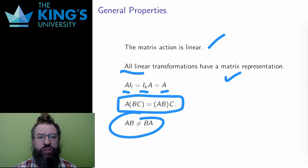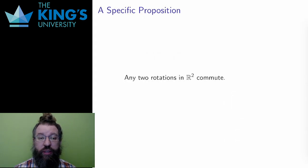That's a good start, but what else can I say? Well, one thing I can investigate is the behavior of certain subsets of transformations. Here is a proposition: any two rotations in R2 commute.